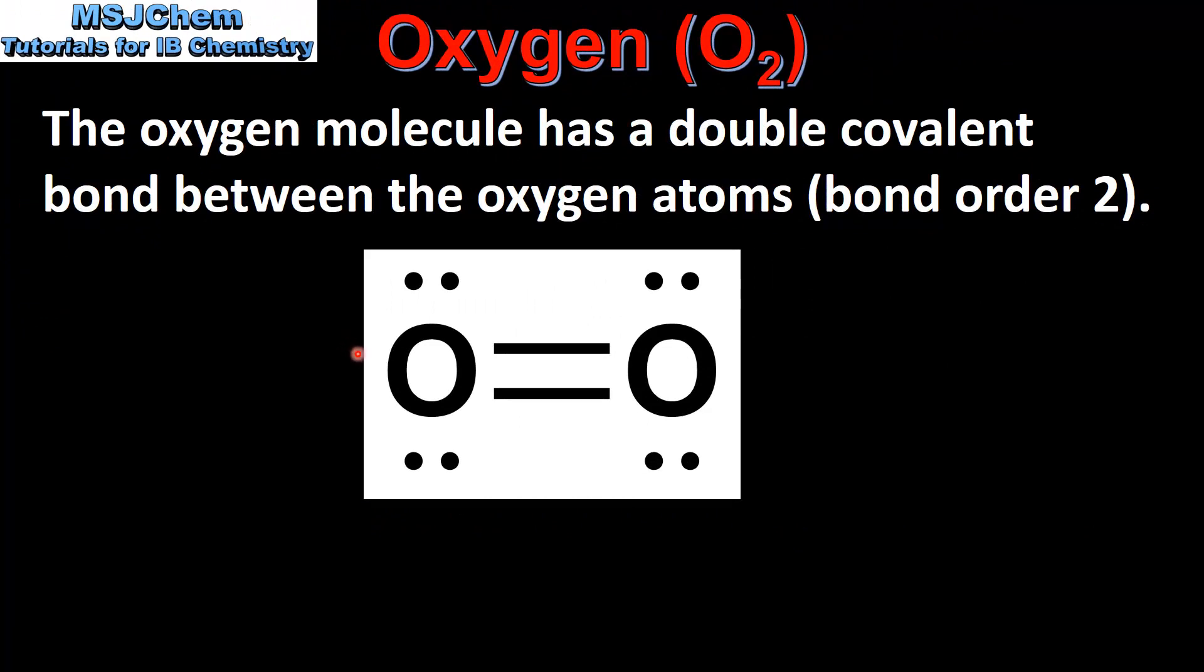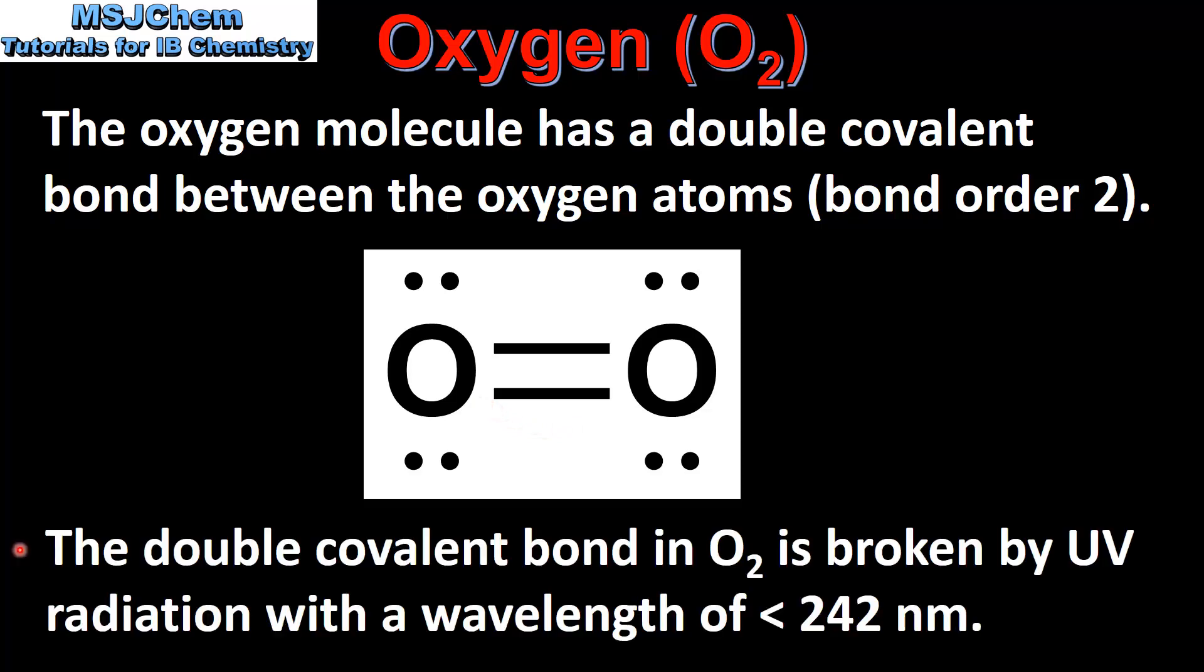Here we can see the Lewis structure for the oxygen molecule. As you can see it has a double covalent bond between the two oxygen atoms. The double covalent bond in O2 is broken by UV radiation with a wavelength of less than 242 nm.